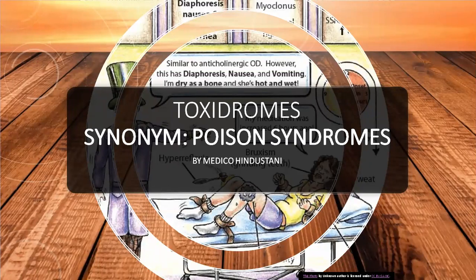In adolescence, poisoning is the third leading cause of injury-related deaths. Greater than 2 million human poisoning exposures are reported annually to the National Poison Data System (NPDS) of the American Association of Poison Control Centers. Approximately 50 percent occurs in children less than six years old, with the highest number of exposures occurring in one and two year old children. Fortunately, children less than six years old account for less than two percent of poison fatalities reported to NPDS.